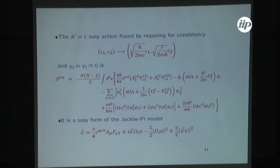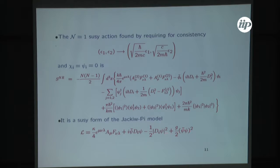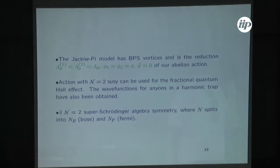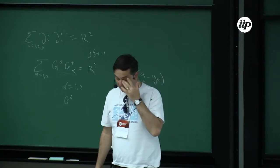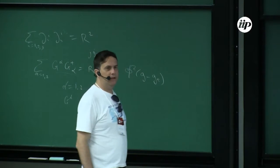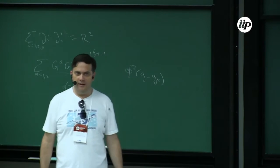This action is a supersymmetric form of the so-called Jackiw-Pi model that has been quite used in condensed matter. The Jackiw-Pi model has a Chern-Simons term, a kinetic term for a scalar, and a phi-to-the-fourth interaction. The interesting thing about this Jackiw-Pi model is that it has BPS vortices that are non-relativistic vortices, and its equation of motion is of the type of the non-linear Schrödinger equation: a single time derivative is proportional to the Laplacian term, plus a non-linear interaction of the wavefunction cubed.